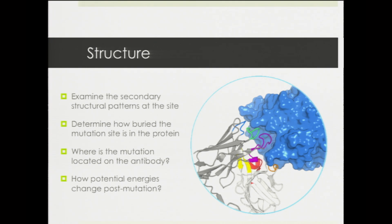I also look at structural information. At the mutation site, I examine local structural patterns and how buried the mutation is inside the protein — if it's extremely buried, it might destabilize the antibody and reduce affinity, whereas if it's on the surface, it might improve affinity. I also look at where exactly the mutation is on the antibody: is it close to where the antibody binds to its target? If so, it has potential to improve affinity. Finally, I compute how the individual energies of the antibody-target interaction — related to molecular structure, bond angles, and other factors — change after the mutation.